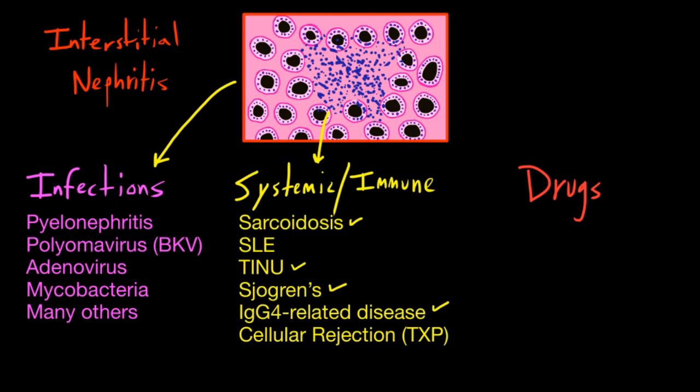In our transplant patients, acute cellular rejection is essentially an interstitial nephritis, where there's an immune response directed against the allograft.